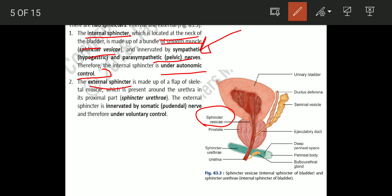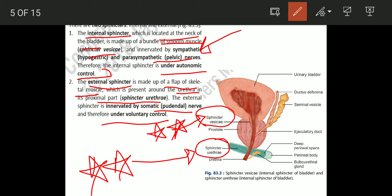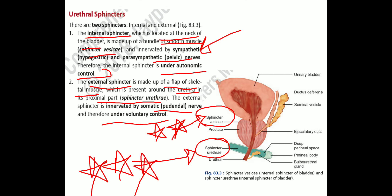The external sphincter is made up of skeletal muscle around the urethra; its proximal part is the sphincter urethrae. The external sphincter is innervated by the somatic pudendal nerve and is therefore under voluntary control. The internal sphincter is under ANS control, whereas the external sphincter is under voluntary control.